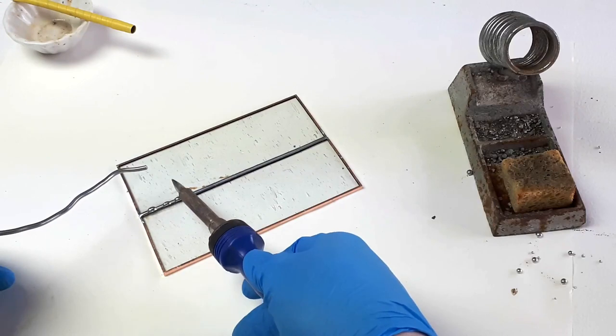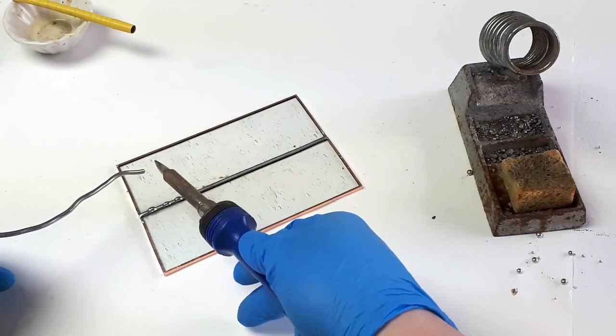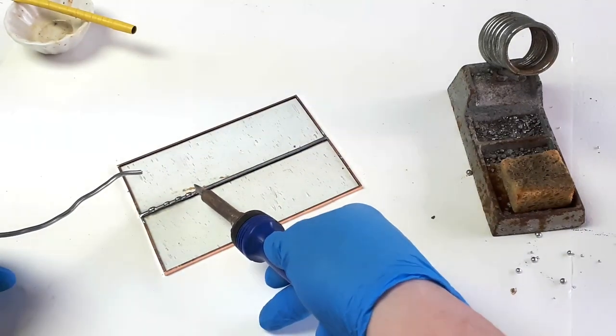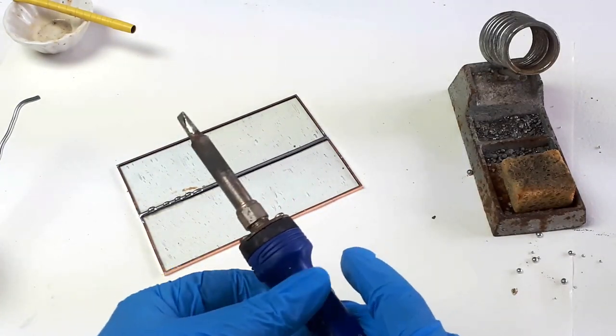So you can use drops or you can use the stick like I'm using here. Now what I'm noticing is these dots are spreading just a little bit, which means the iron is just a tad too hot.